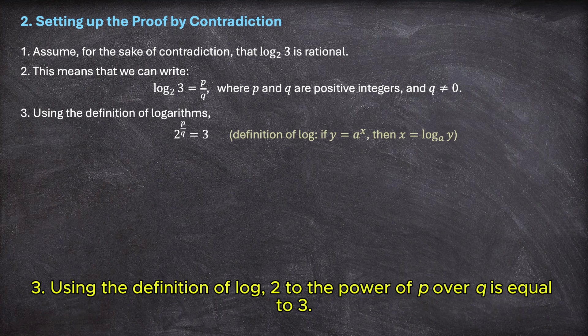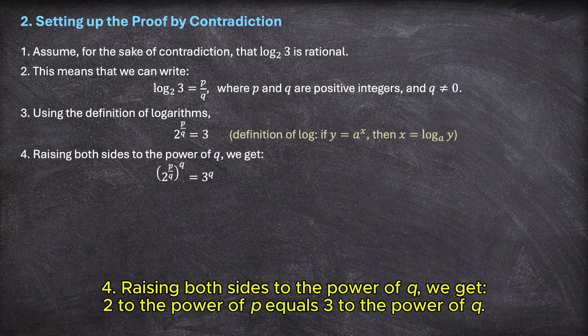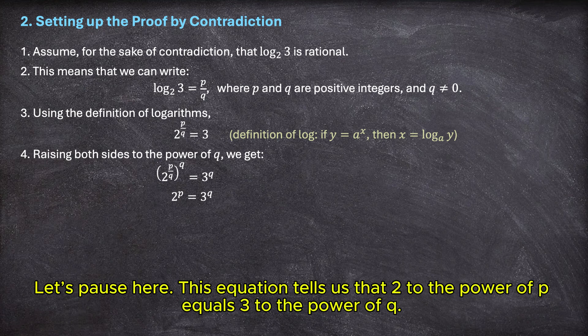3. Using the definition of log, 2 to the power of p over q is equal to 3. 4. Raising both sides to the power of q, we get 2 to the power of p equals 3 to the power of q. Let's pause here.